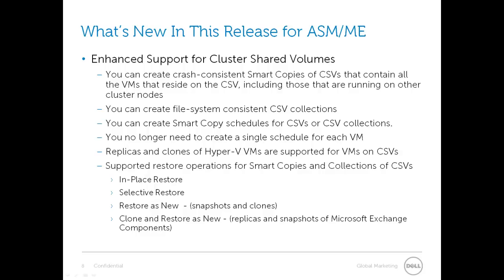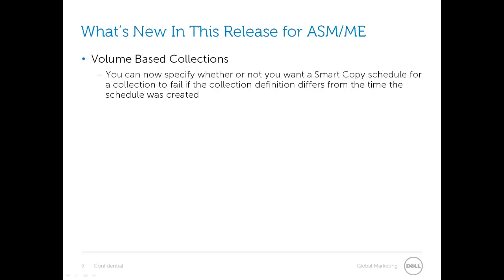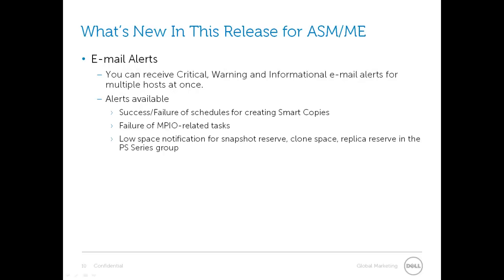The supported restore operations for smart copies and collections of CSVs include: in-place restore, selective restore, restore as new, and clone and restore as new. For volume-based collections, you can now specify whether a smart copy schedule for a specific collection should fail if the collection definition differs from when the schedule was created. You can receive critical, warning, and informational email alerts from multiple hosts at once, including success and failure of smart copy schedules, failure of MPIO-related tasks, and low space notifications in the PS Series group for snapshot reserve, clone space, and replica reserve.